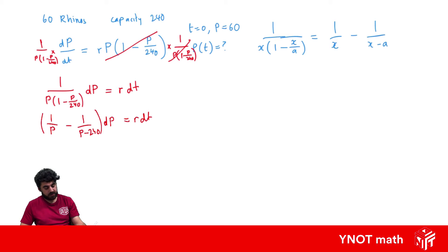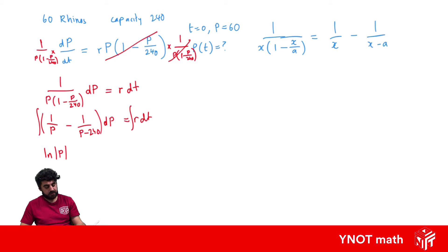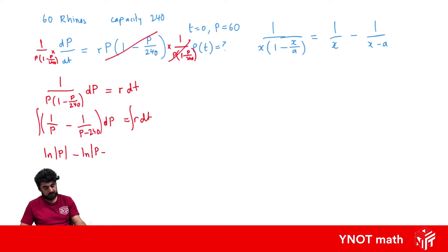Now we can go ahead and integrate both sides. The integral of 1 over p is just the ln of the absolute value of p. For the second fraction, since we have the subtraction of two terms we integrate them separately. The derivative of the denominator is in the numerator, so that gives us minus ln of the absolute value of p minus 240. The integral of r with respect to time, since r is a constant, gives us rt plus a constant.